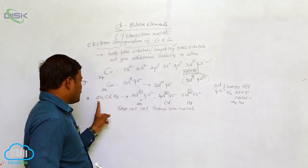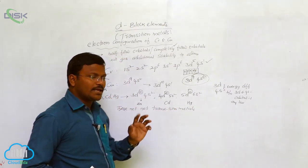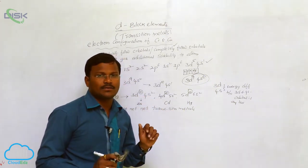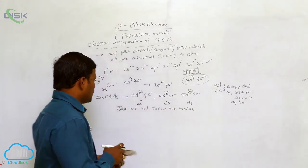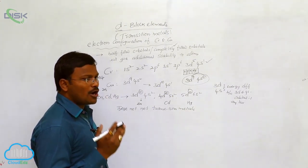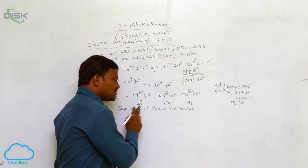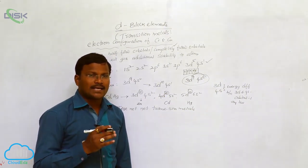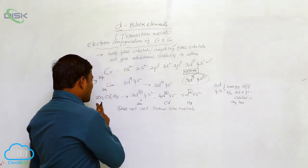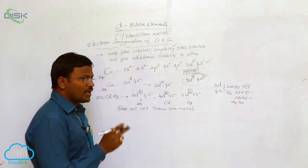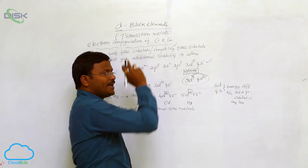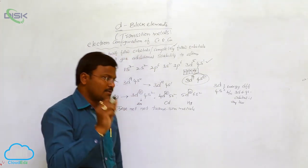In the case of zinc, cadmium, and mercury, in their atomic or ionic state they have completely filled d-orbitals. Hence, except these elements, all remaining d-block elements are called transition metals. However, as part of the d-block elements, the properties of zinc, cadmium, and mercury are also included under the heading of transition metals.